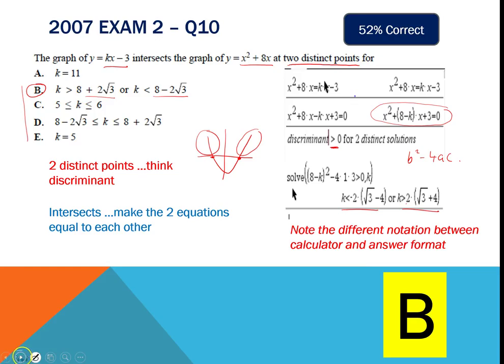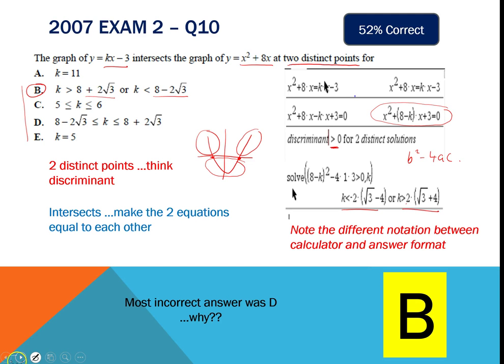Surprisingly, the most common incorrect answer was D — students had the same values but chose the region beneath the x-axis, which is when the discriminant is less than zero rather than greater than zero. Be aware of that and please don't make that mistake.